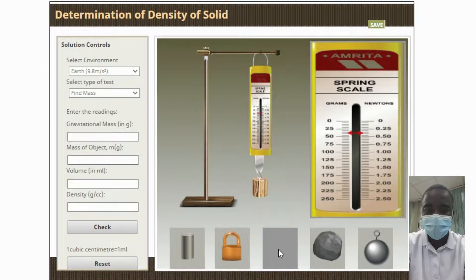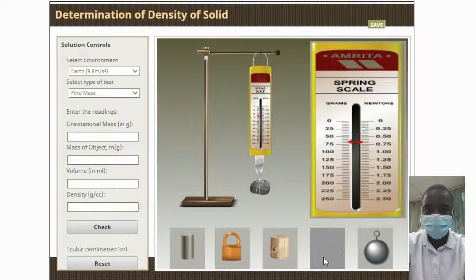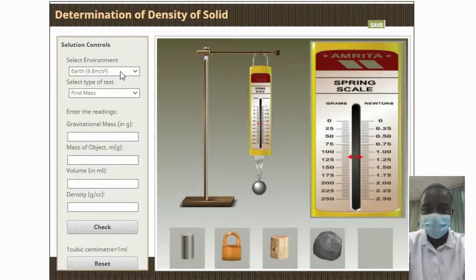When thinking about the mass of an object, it is important to consider the concept of weight. Weight is the force an object has due to gravity. It is different than mass, which is the amount of matter in an object. An object with a large mass may have a small weight, and vice versa.